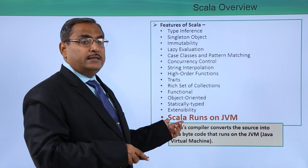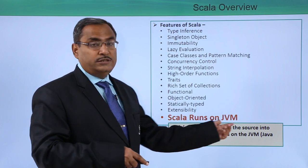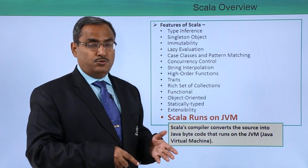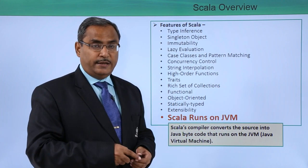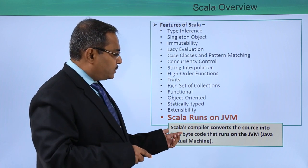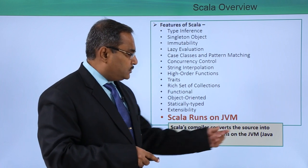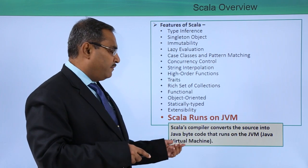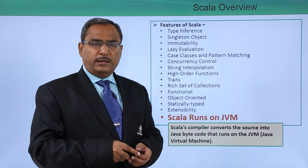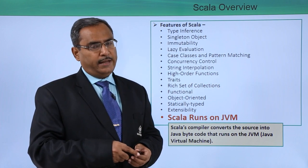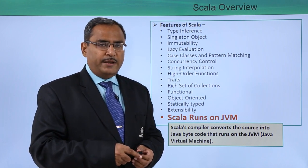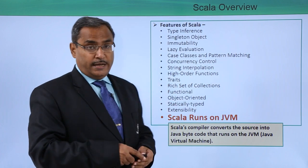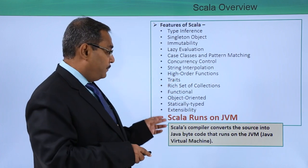The next feature is that Scala runs on the JVM. The syntax of Scala is very much alike to Java, which is why it is gaining more popularity. Scala's compiler converts source code into Java bytecode that runs on the Java Virtual Machine. The bytecode format makes the language platform independent.